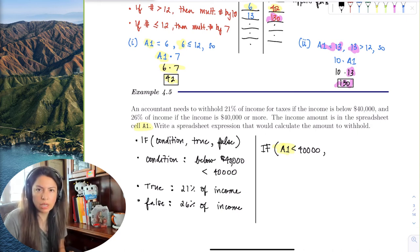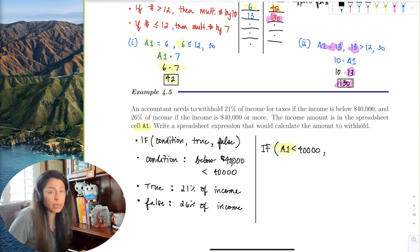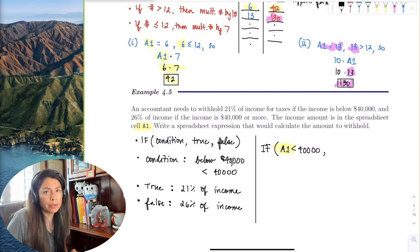So we just put 40000 exactly how I'm writing it, is exactly how you would enter your answer or write out your answer in the spreadsheet.